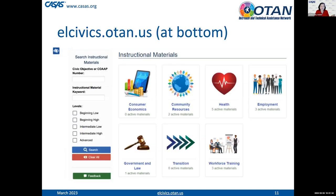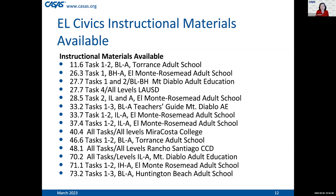When you scroll down a little bit, you see those topic areas in visual format. You can see that we have two active materials in community resources, five in health, three in employment, one in government and law, and three in workforce training. We're missing some in consumer economics and transition, and we're going to be asking you to perhaps submit in those areas. These are the materials — you can see not only the co-op number, tasks, and levels, but the school that submitted them. We're so pleased and proud of these schools who took the time to submit their materials.